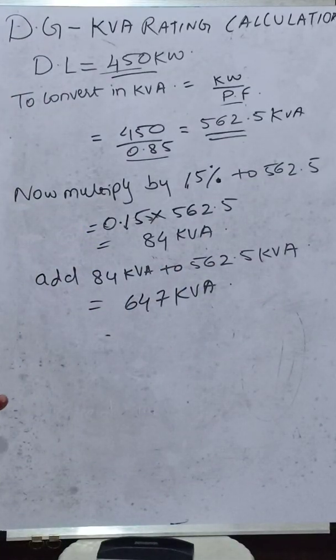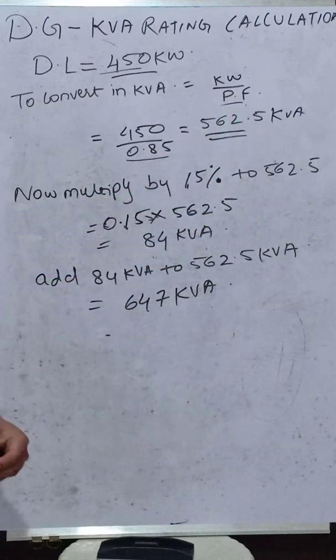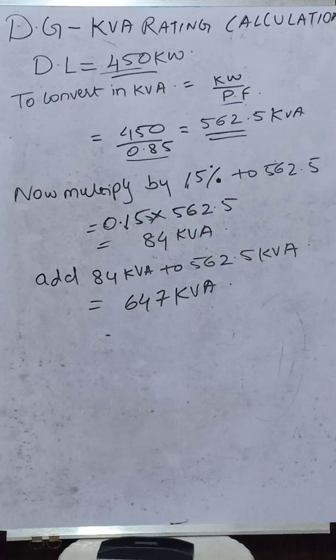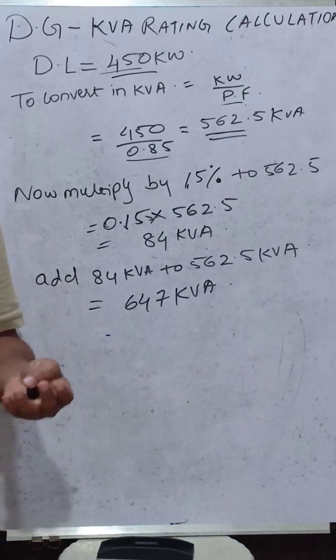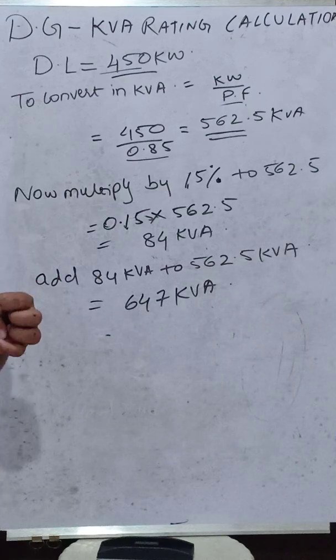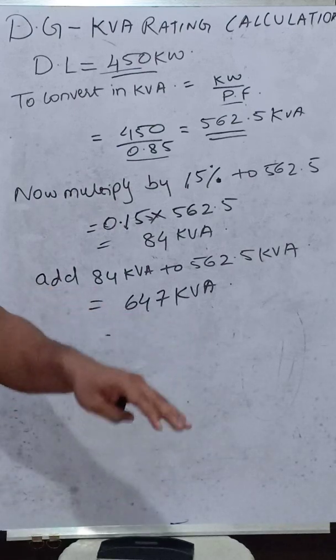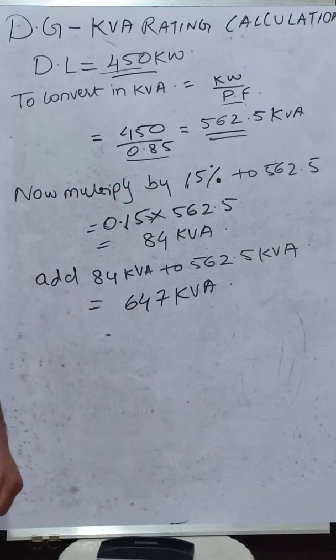Now, we have to multiply by 15% to this demand kVA. Now, why 15%? In the transformer, we have multiplied by 10%. But since the DG involves the motor load which fetches up 6 to 7 times more than normal current at the time of starting, losses occurring in the DG is more as compared to the transformer.